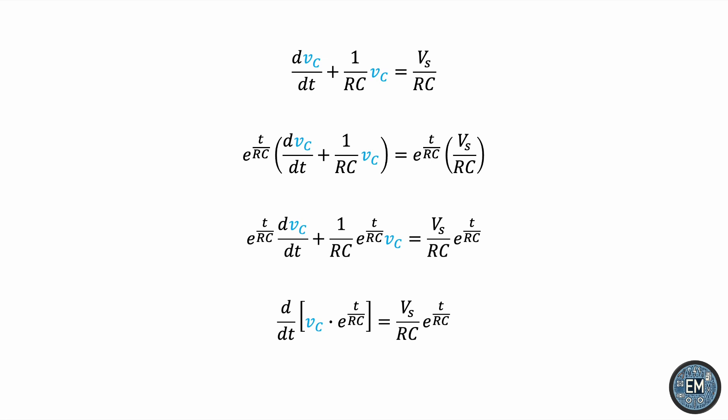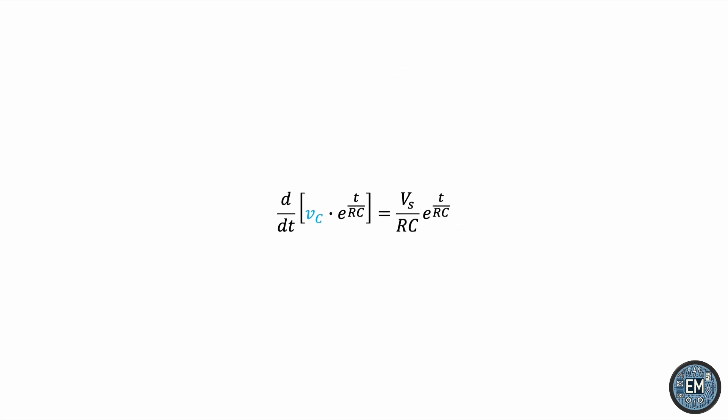The integral on the right-hand side is easy because VS/RC is just a constant. If VS were an AC source, then we would have to integrate whatever function that is, but because it's a DC source, in this case it's just a constant and we'll only have the exponential function to integrate. We'll get the following. Now K is the constant of integration, and we called it K, not C, in order not to confuse it with the capacitance.